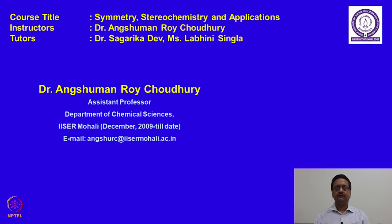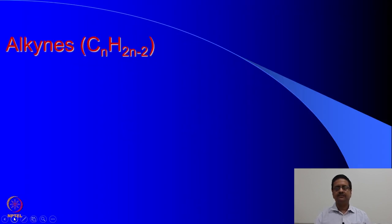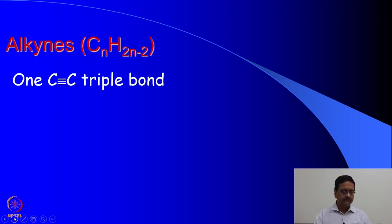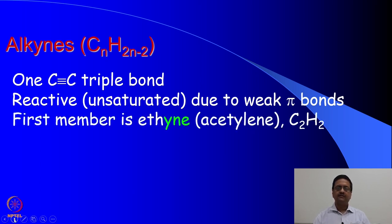We were trying to understand the different rules of IUPAC nomenclature for various organic compounds. In the previous two lectures we have learnt about how to write the names of organic molecules for simple hydrocarbons, substituted hydrocarbons, and the naming of alkenes. We would continue to understand the names of alkynes. Alkynes are compounds which contain a C-C triple bond and are reactive in nature due to weak pi bonds. The first member of this series is ethyne or acetylene, identified as C₂H₂.